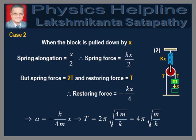In case 2, when the block is pulled down by x, the spring elongation is equal to x/2. Therefore, spring force is equal to Kx/2. From the figure, it is clear that spring force is equal to 2T and restoring force is equal to T. Therefore, restoring force is equal to minus Kx/4, and acceleration is equal to minus K over 4m into x, which implies T is equal to 4π√(m/K).